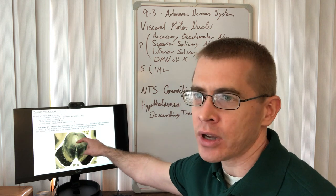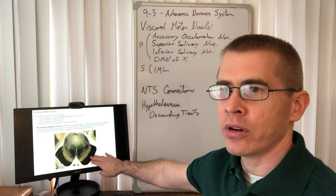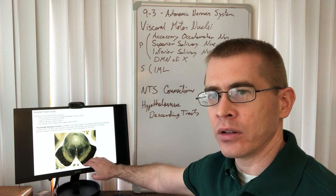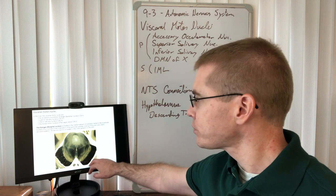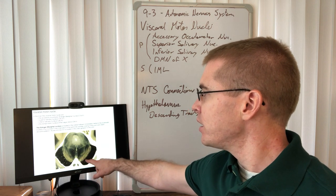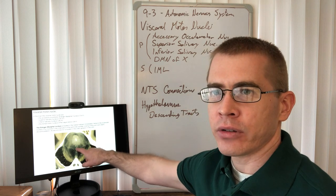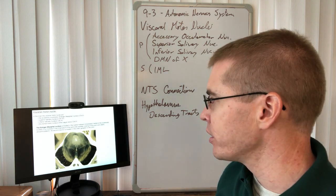We see here the periaqueductal gray around the cerebral aqueduct. In the brainstem, we have here the white matter tracts of the corticospinal, the cruce cerebri. We have substantia gelatinosa behind that, along with here in the middle, these slightly grayer portions, the oculomotor nuclei, the accessory and the primary oculomotor nuclei.